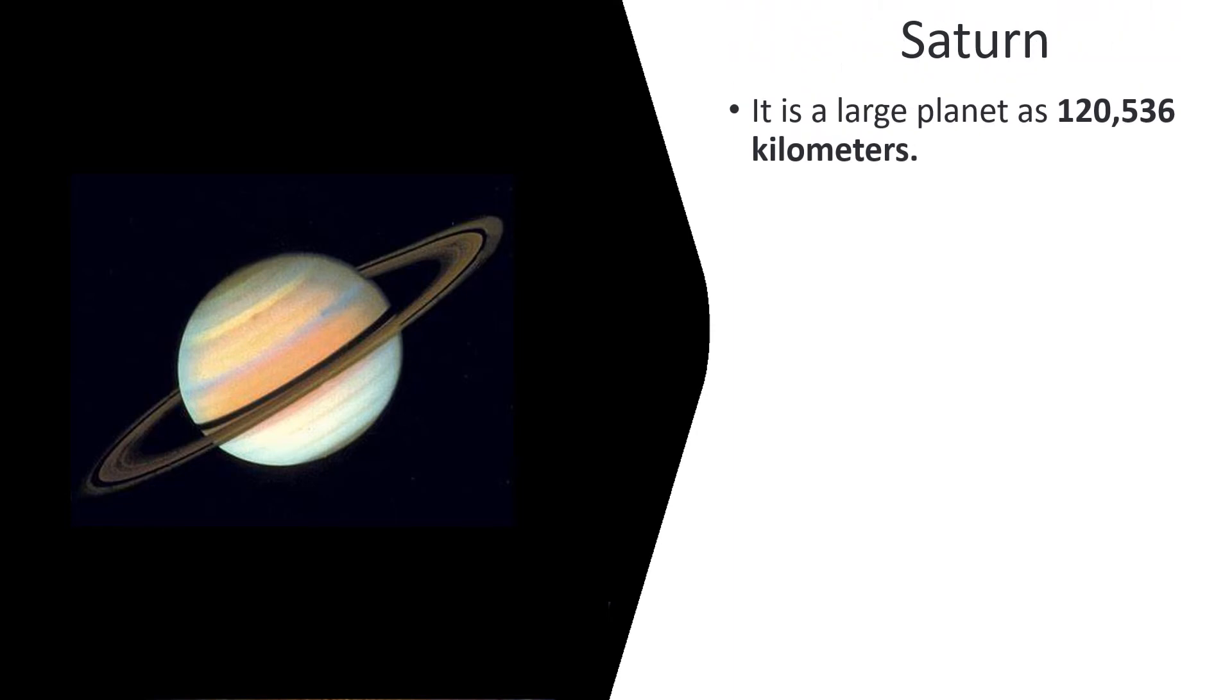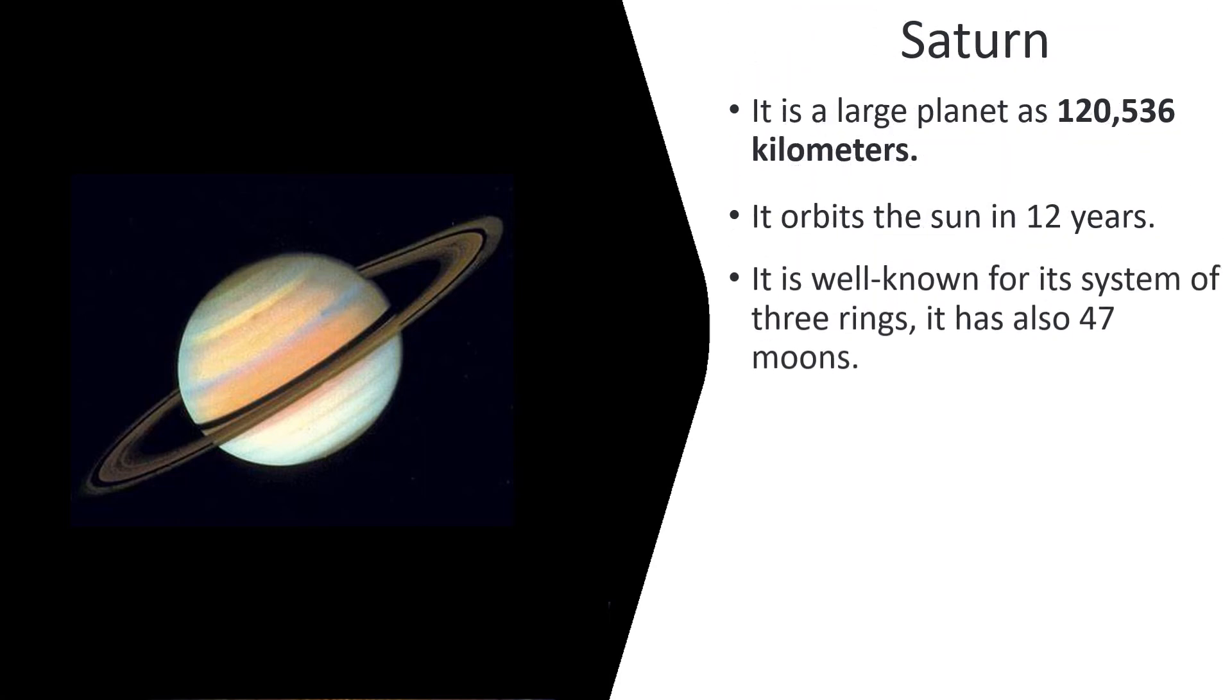Saturn. It is a large planet at 120,536 kilometers. It orbits the Sun in 12 years. It is well known for its system of three rings and has 47 moons.